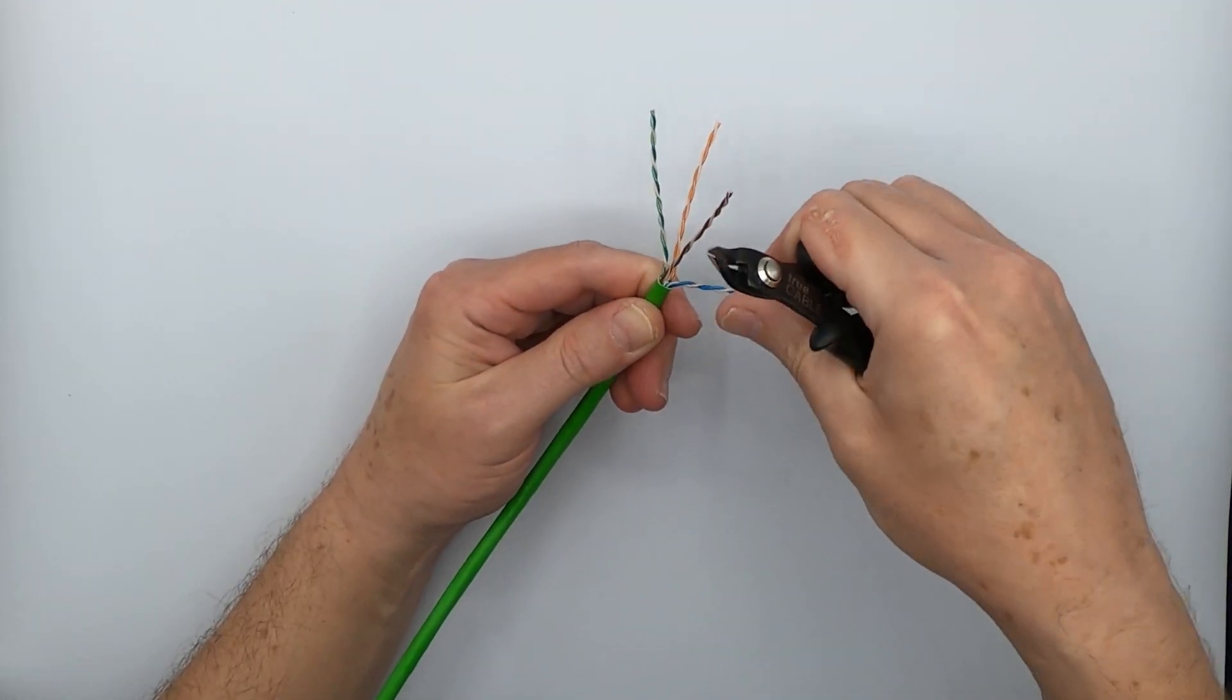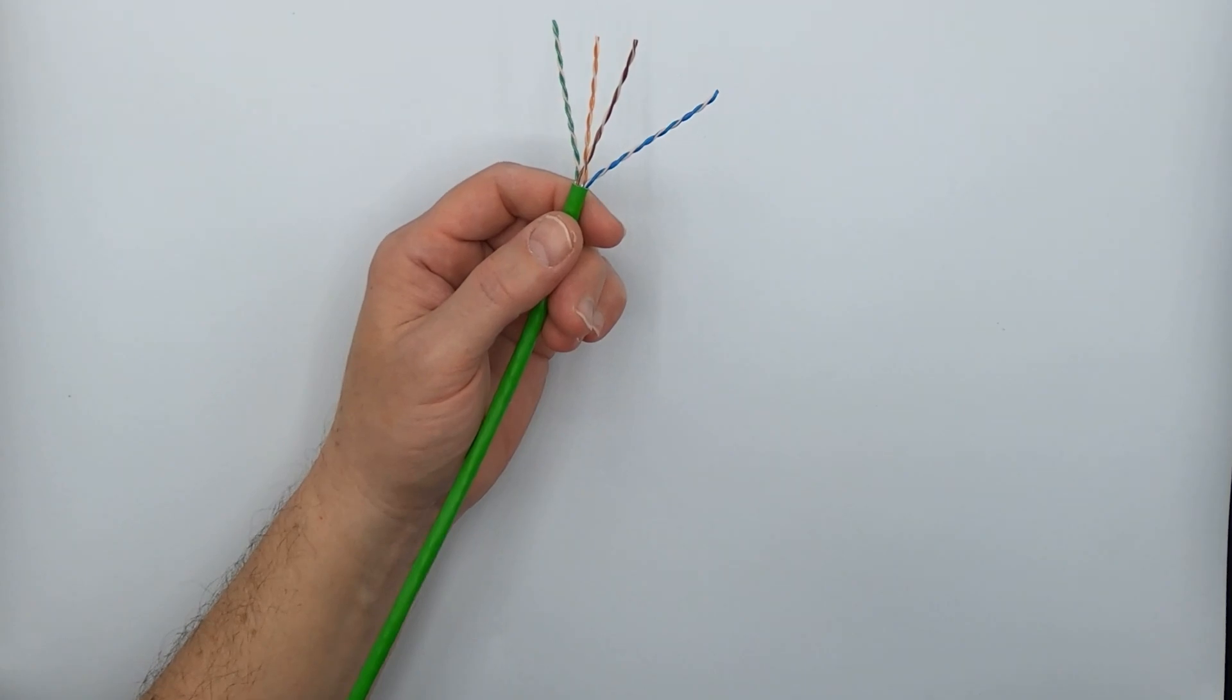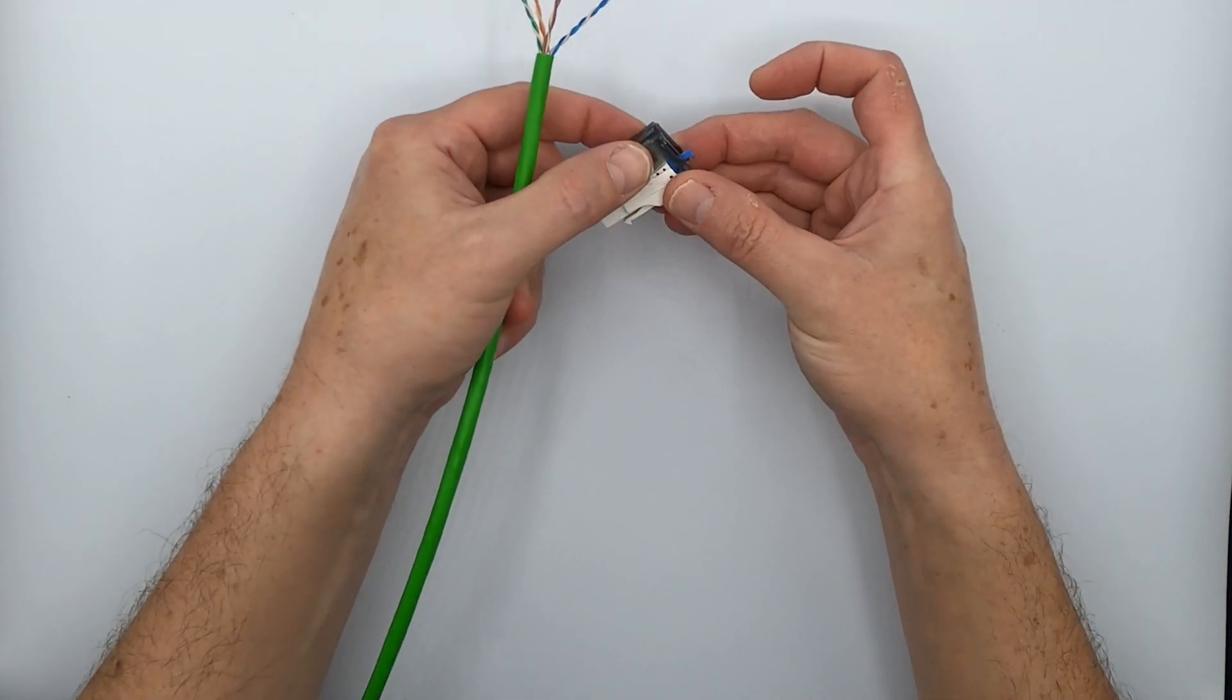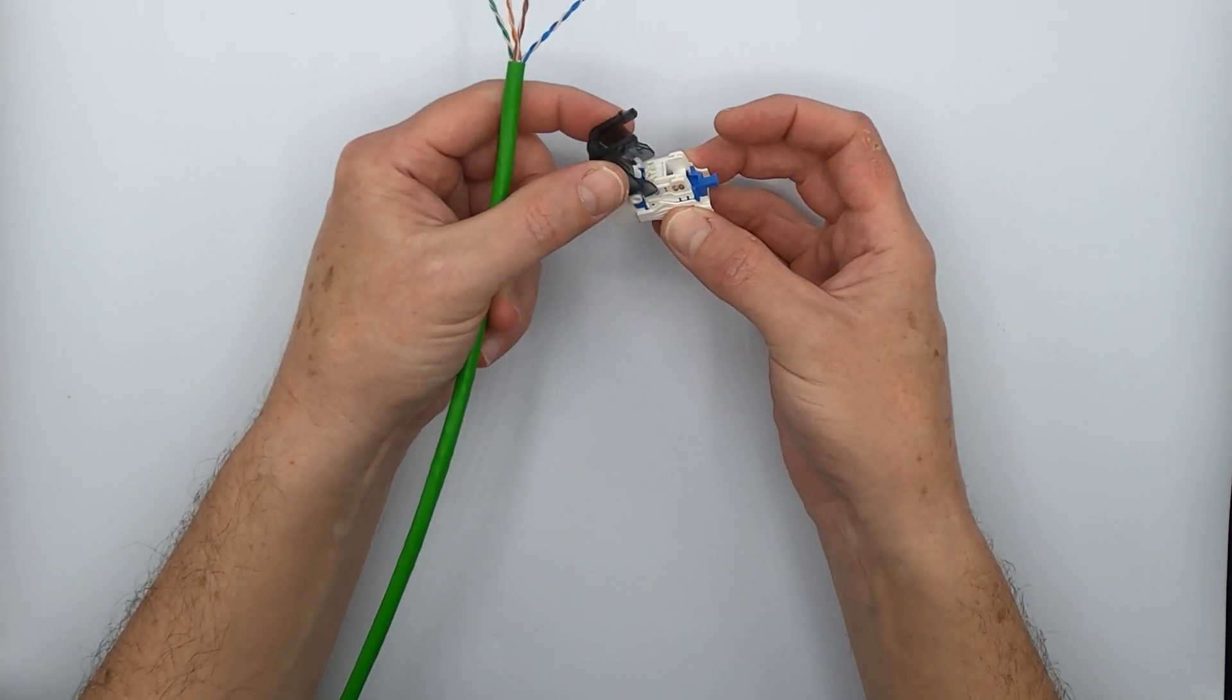All right, so you put your conductors back out, and now it's time to start working with the jack. So open up your keystone jack like this, it'll come ready to use. Just simply take out the conductor cap, conductor holder cap I should say.